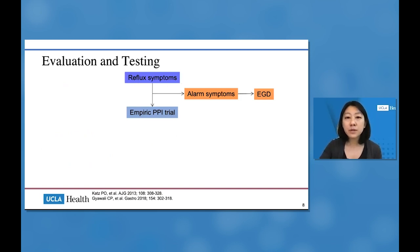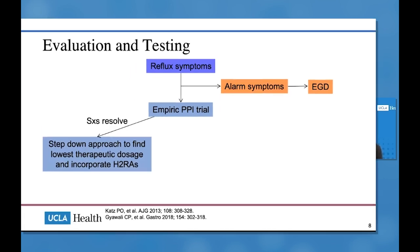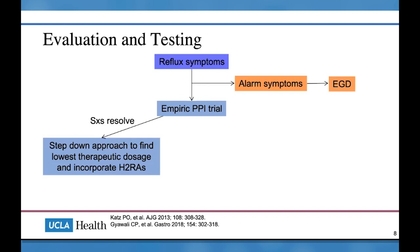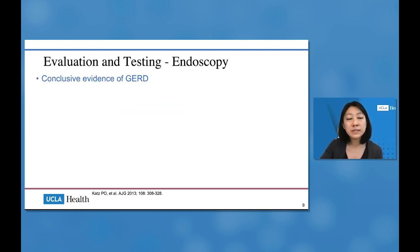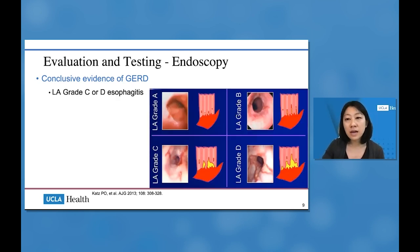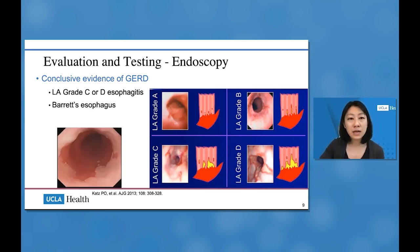If a patient's symptoms resolve with the empiric PPI trial, you want to do a step-down approach to find the lowest therapeutic dosage, incorporating H2 receptor antagonists to decrease PPI use. If symptoms don't resolve, you generally want to do an upper endoscopy. On upper endoscopy, conclusive evidence for GERD includes LA grade C or D esophagitis, Barrett's esophagus, or a peptic stricture. Everything else is not considered diagnostic evidence of GERD.